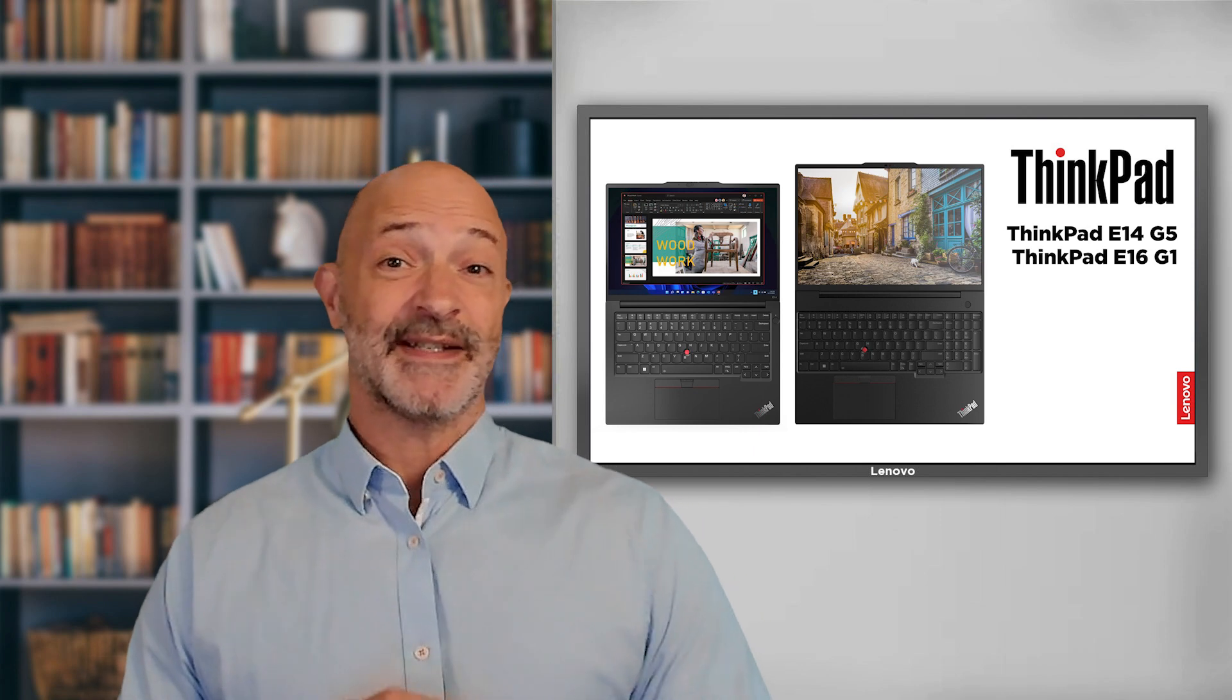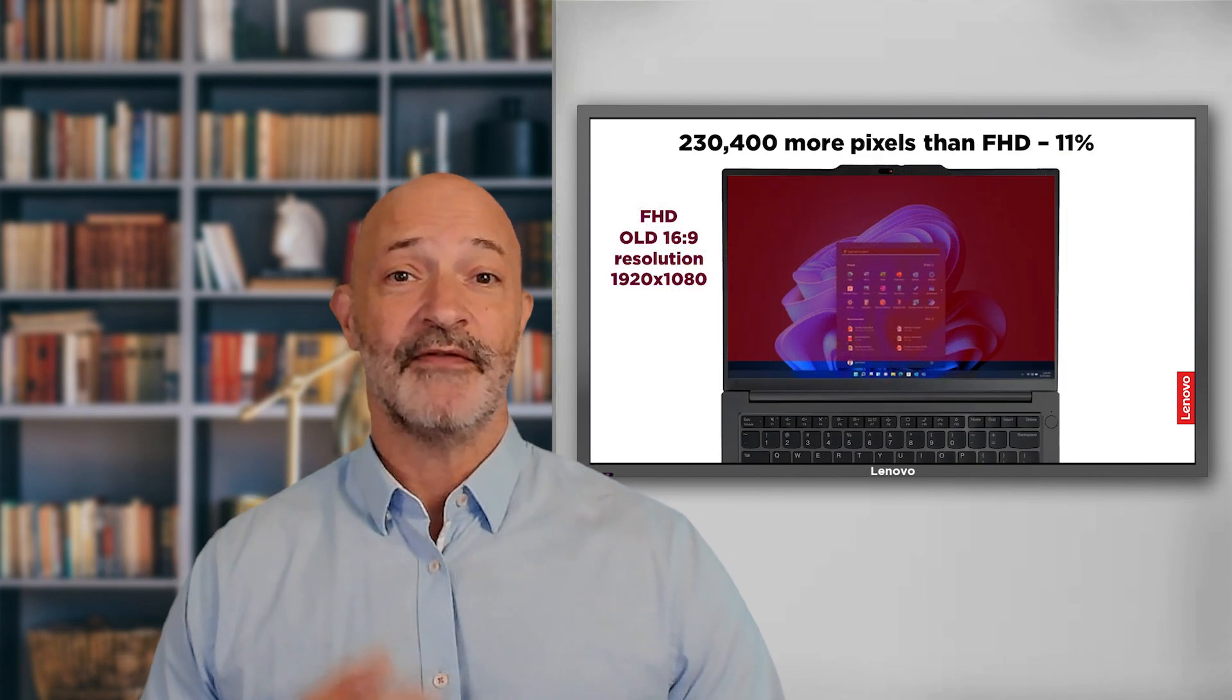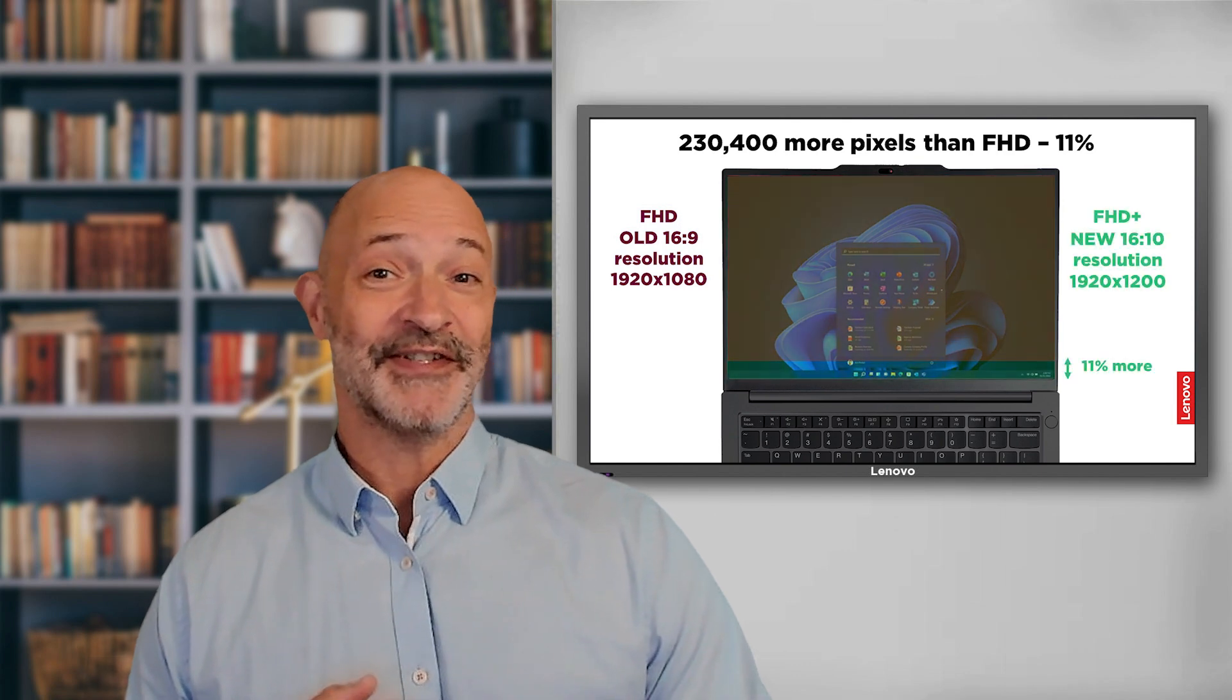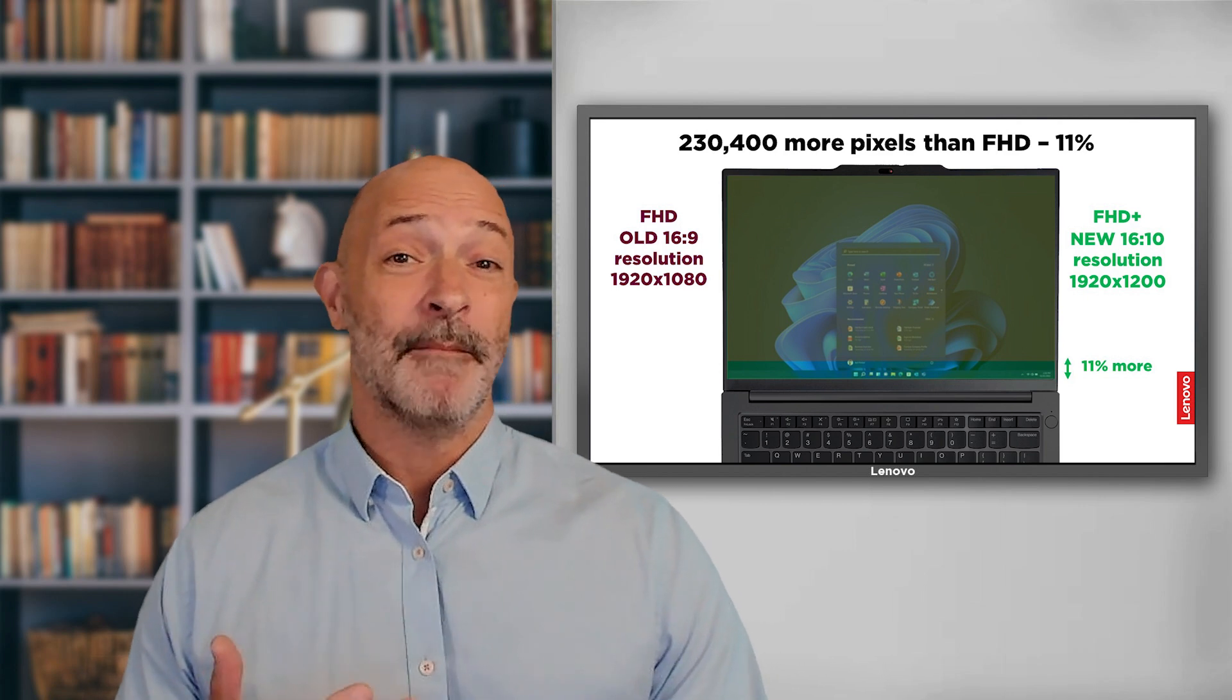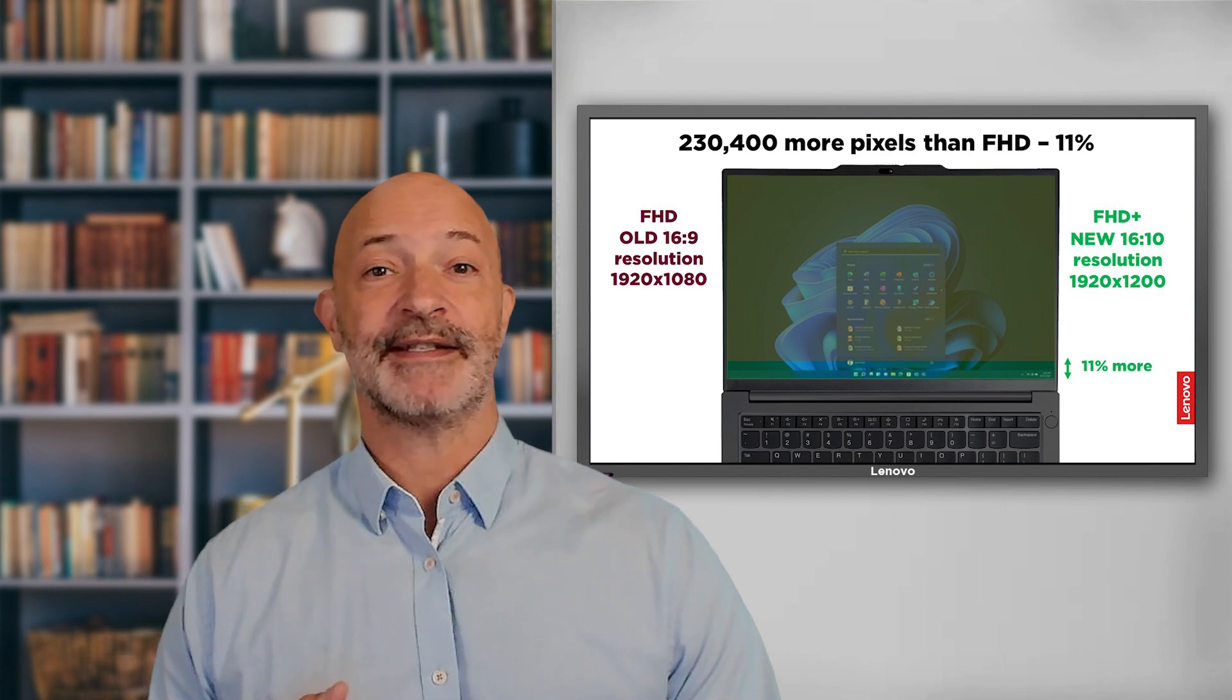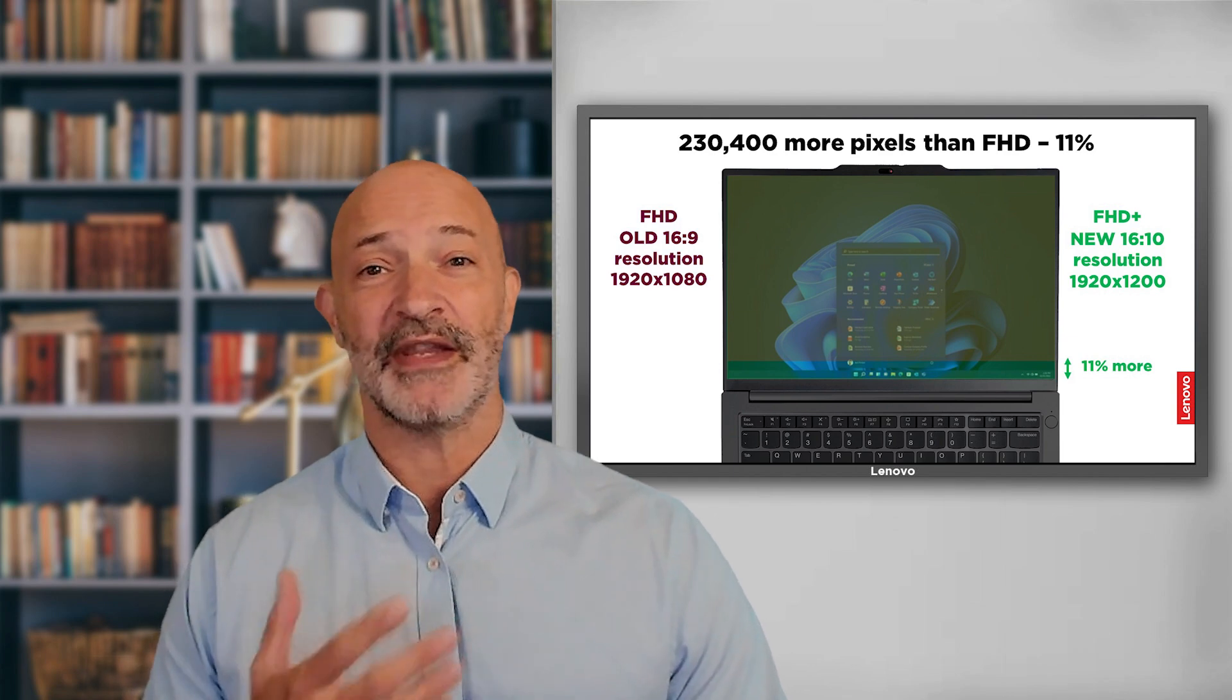Moving from 16 by 9 to 16 by 10 gives these laptops the following benefits. First of all, the greater vertical height gives you more pixels on the display. 230,400 more pixels to be precise. More pixels gives you more content, in fact about 11% more content. To put that in context, you can have more rows in your spreadsheet, more lines of your Word document, or extra photo editing space right there in front of you.